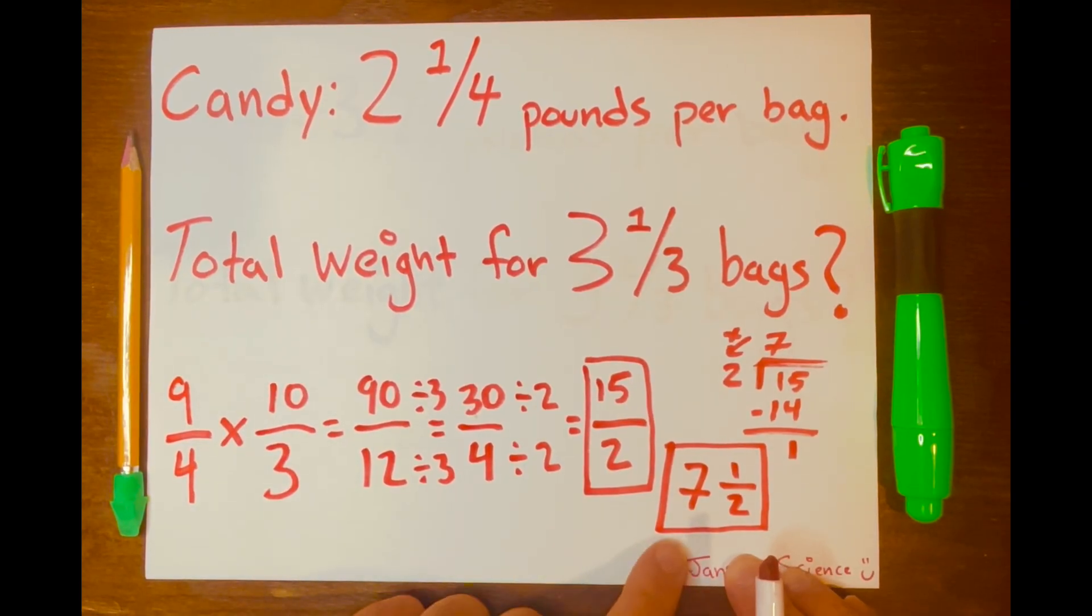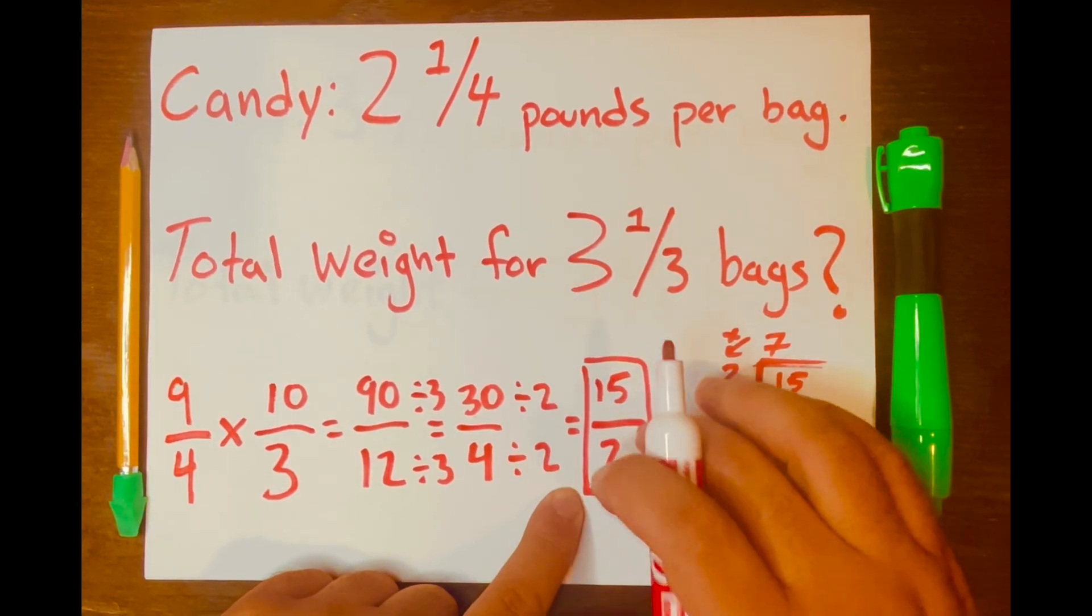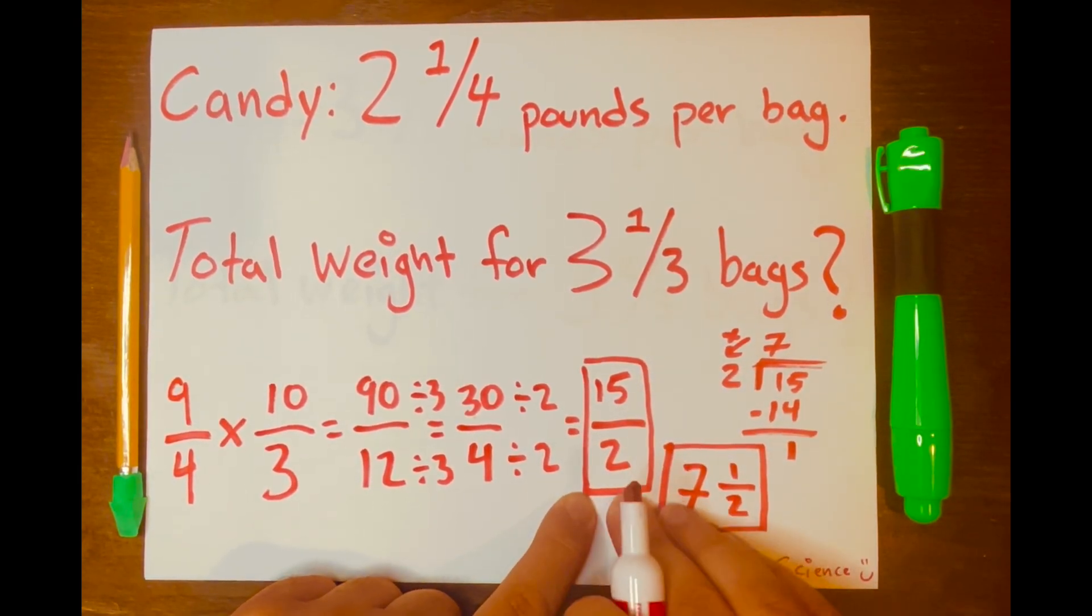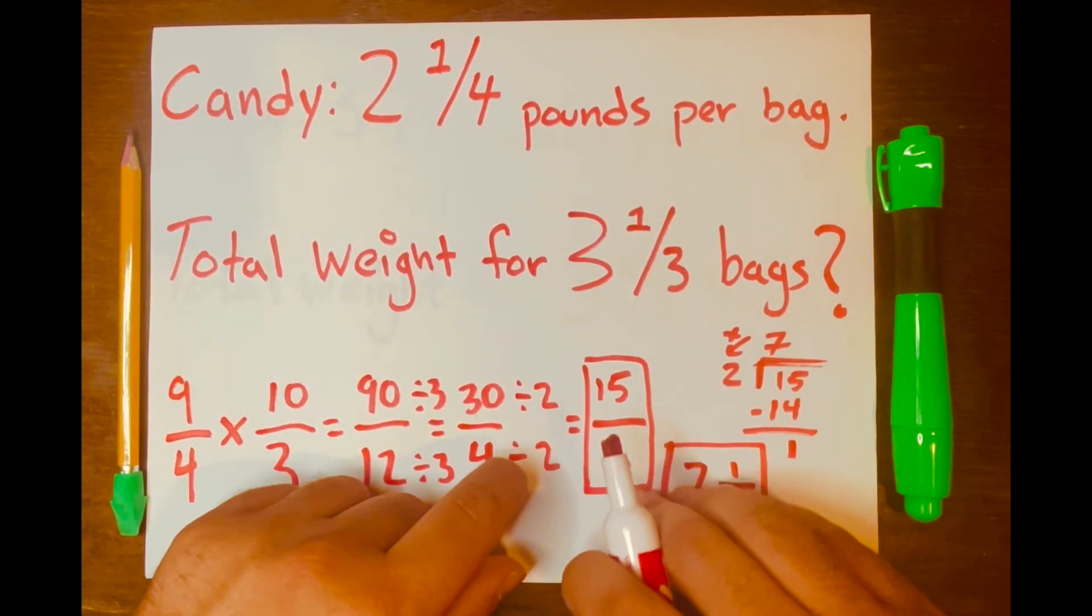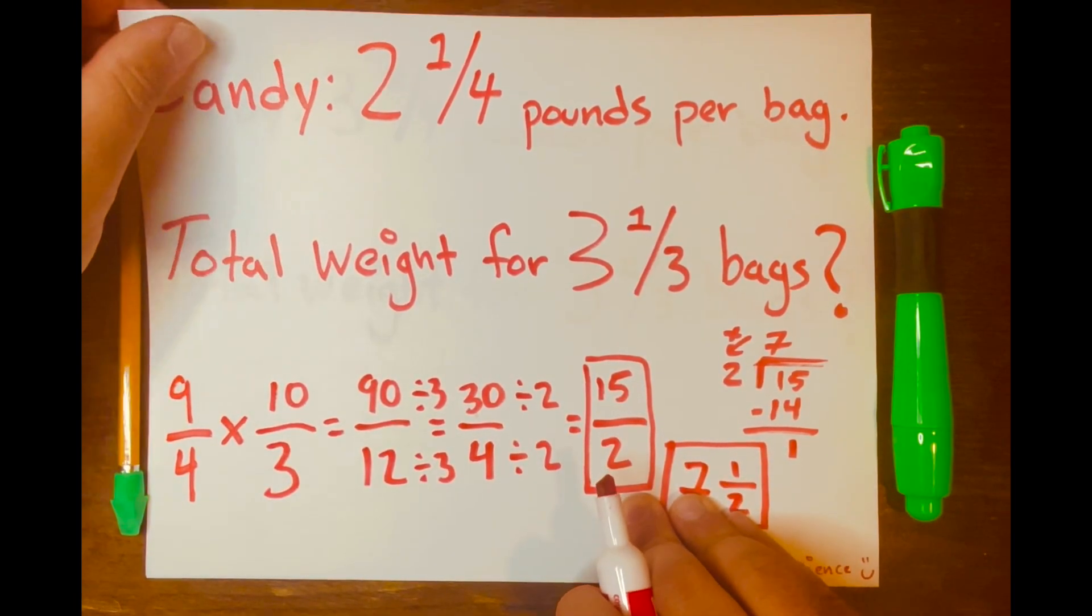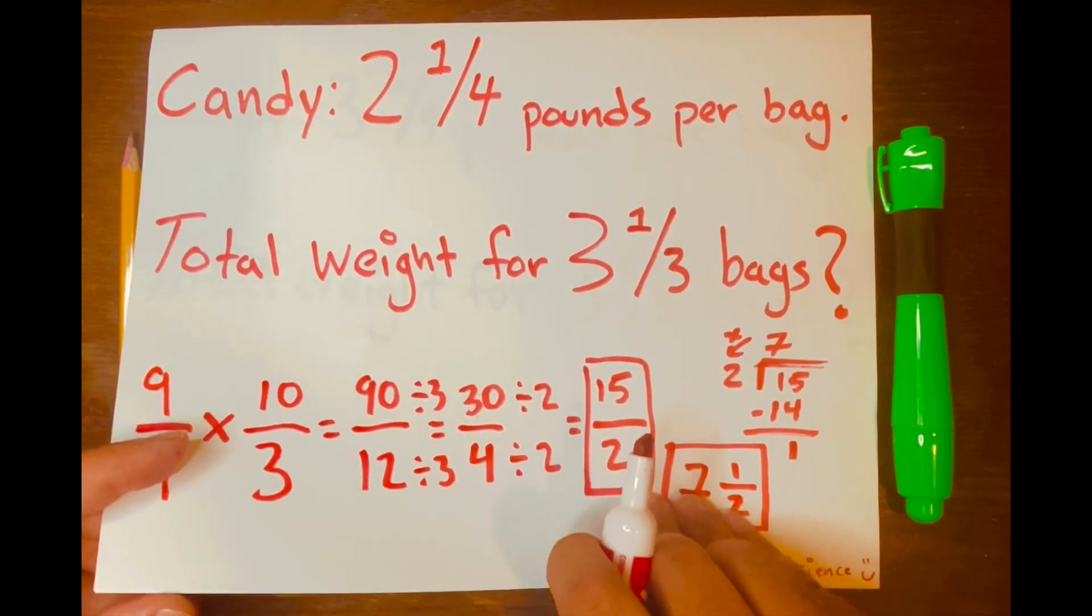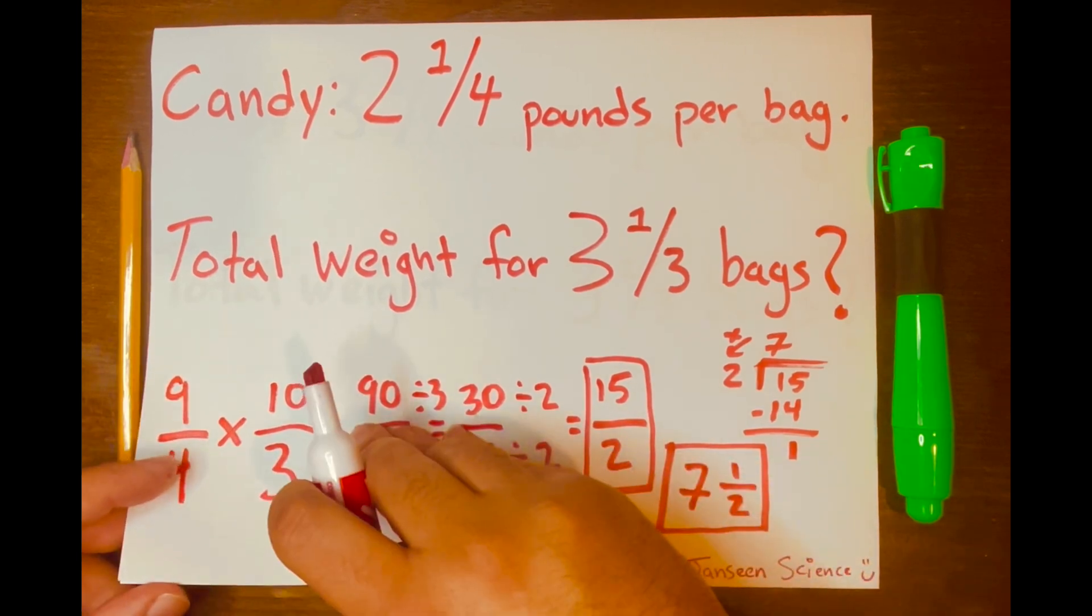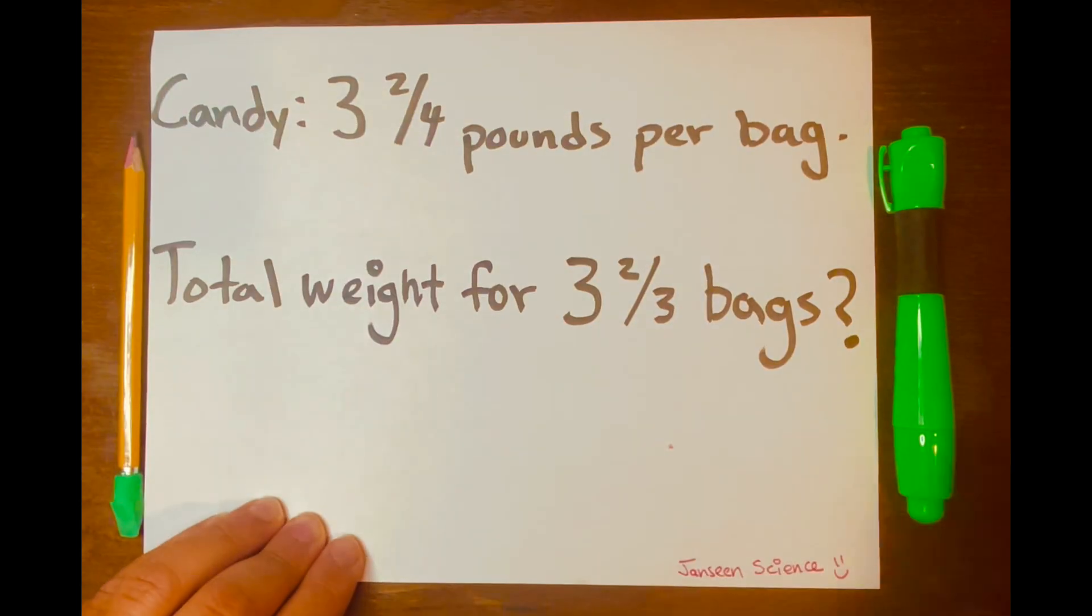And there you go. That is your answer in a mixed number form. And 15 over two is also your answer in an improper fraction form. If you have not subscribed to the channel, please subscribe to the channel to support. And I'll see you in the next video. And let me show you the bonus problem here for you to solve. I want you to type your answers in the comment section down below.